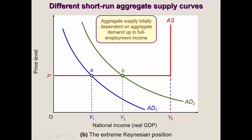Beyond the full capacity point, output doesn't increase anymore. Further aggregate demand increases will only lead to price rises. If a country has, say, 100 factories, once it makes use of all 100, it cannot produce any more at any price level. So if demand increases, without bringing in inputs from outside, all aggregate demand does is push up prices — we enter the inflationary gap. Aggregate demand keeps going up, and we only experience price rises, while the rise in output stalls.